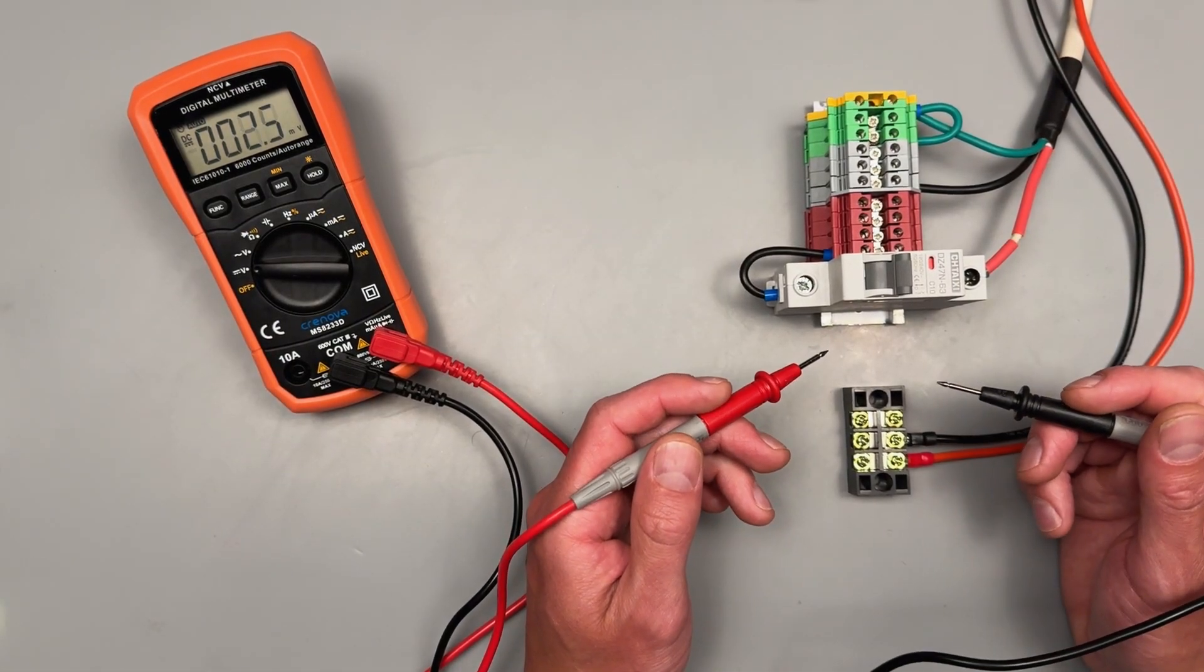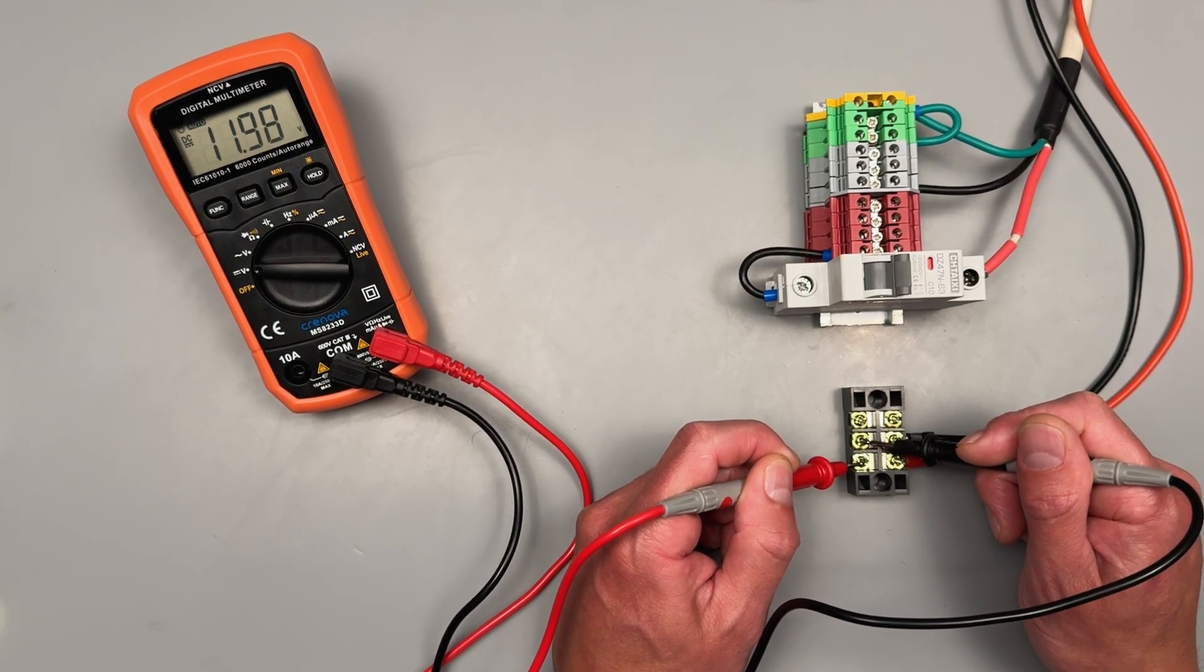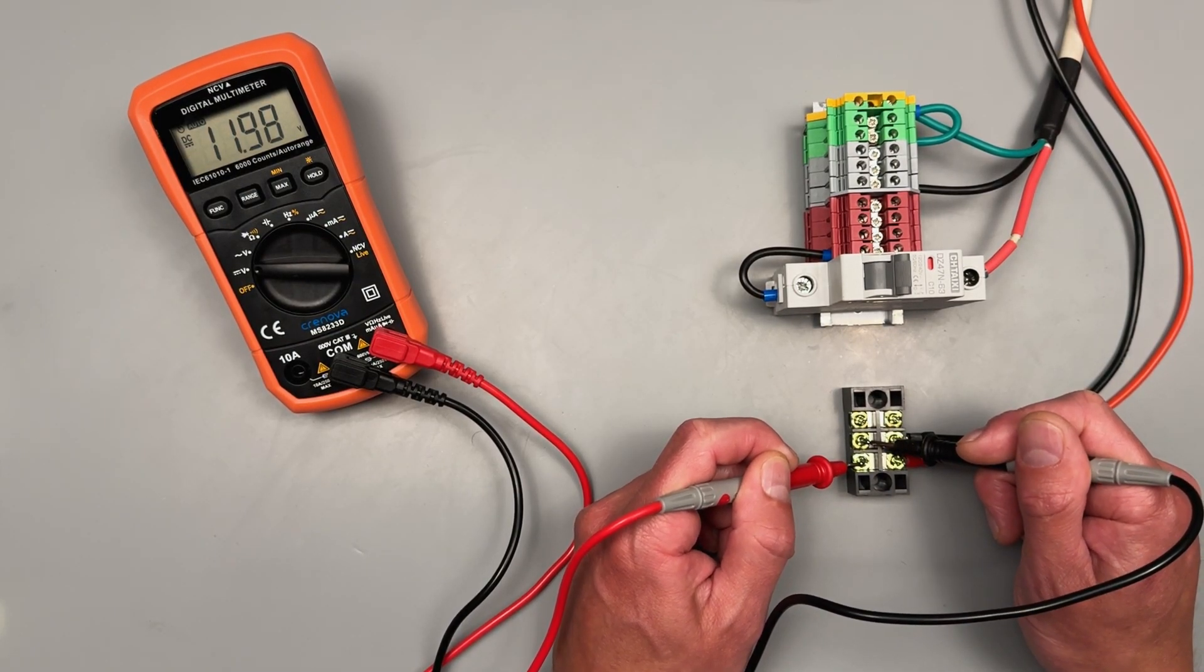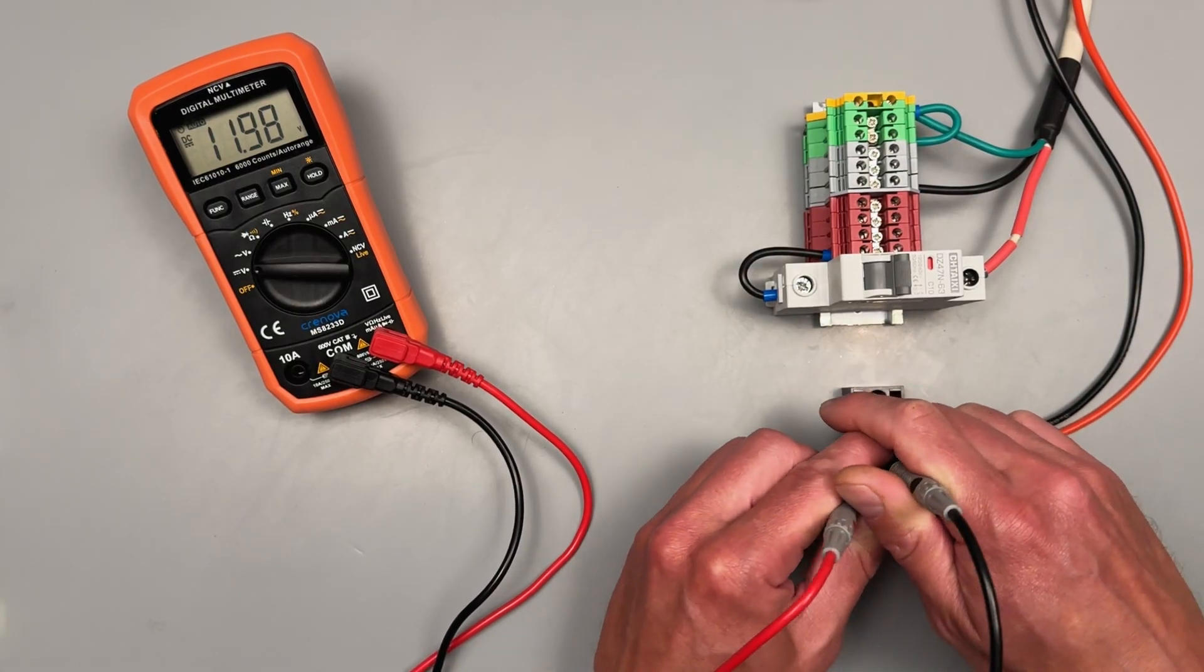If I'm going to measure a DC circuit, I'm going to do red to red, black to black, and we're showing 11.98 there on the little screen. So I've got a 12 volt source.